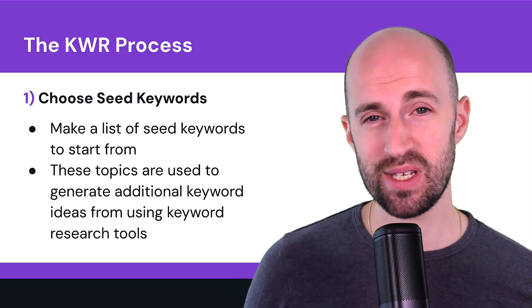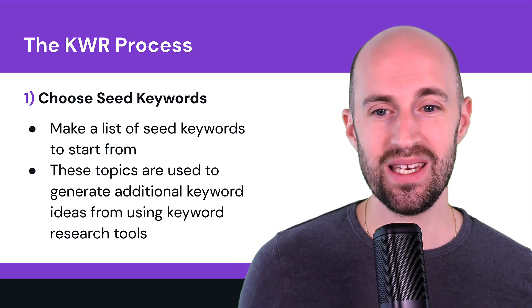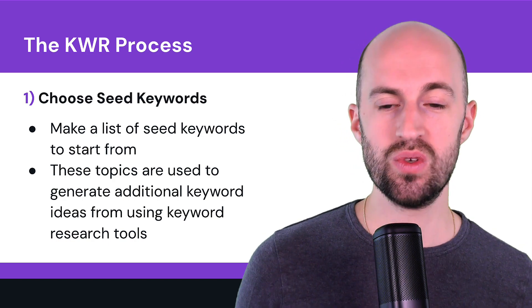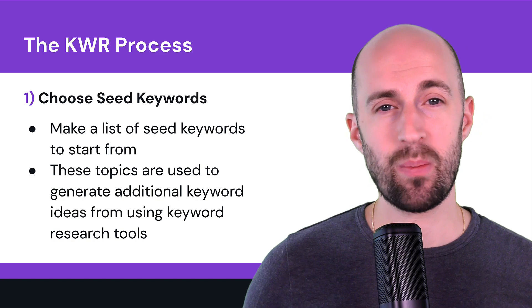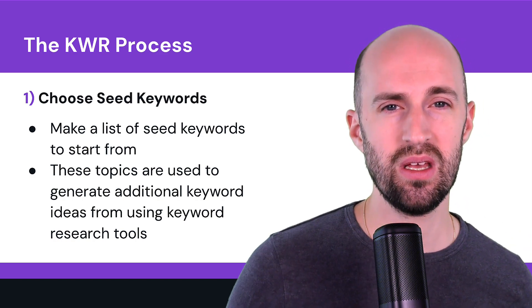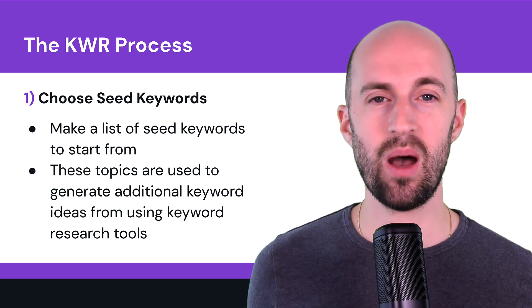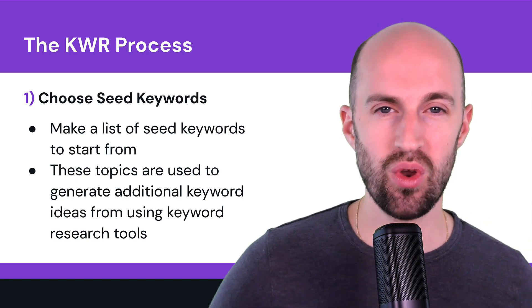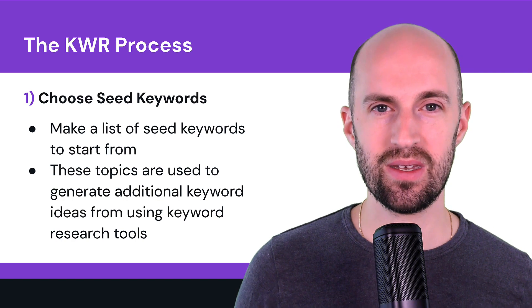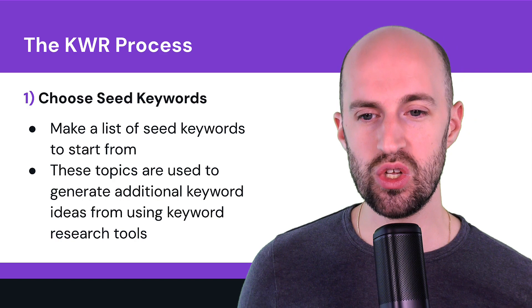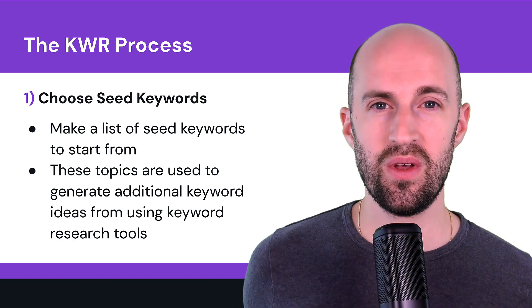Now let's talk about the keyword research process, going through five steps. Step one is to choose your seed keywords. Seed keywords are the initial topics used to generate additional keyword ideas in a keyword research tool. Make a list of seed keywords based on your products, services, industry, and topics you'll cover. Draw from your knowledge of your business and brainstorm as much as possible. These are your starting points, so be exhaustive — list everything in a spreadsheet or document, covering all areas of your business.